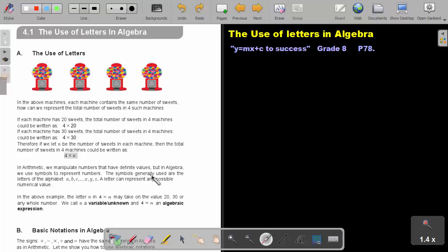The symbols generally used are the letters of the alphabet. It can be an A, a B, a C, up to the letter Z. A letter can represent any possible numerical value.